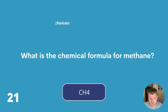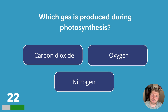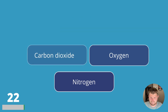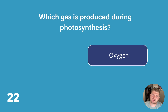Question twenty-two. Which gas is produced during photosynthesis? Carbon dioxide, oxygen or nitrogen? The answer is oxygen.